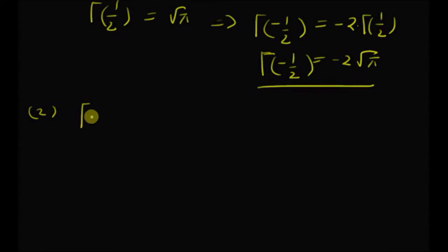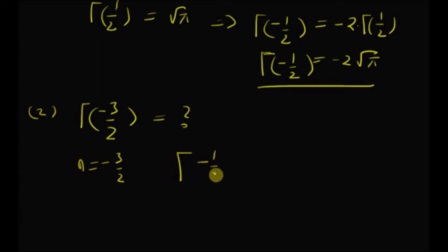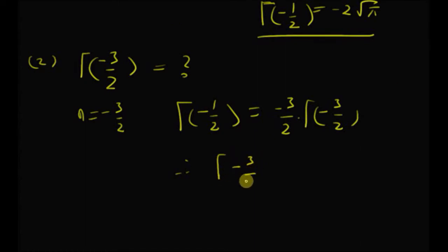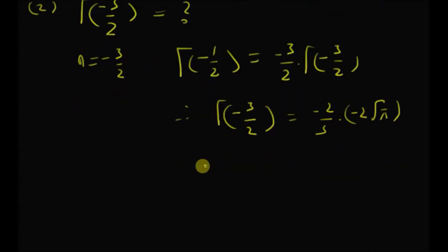The second one is gamma of minus 3 by 2. By using n equal to minus 3 by 2, we can write that gamma of 1 by 2 is equal to minus 3 by 2 multiplied by gamma of minus 3 by 2, again using the property that gamma of n plus 1 is equal to n times gamma of n. Therefore, gamma of minus 3 by 2 is equal to minus 2 by 3 multiplied by minus 2 into square root of pi. Therefore, gamma of minus 3 by 2 is equal to 4 by 3 into square root of pi.